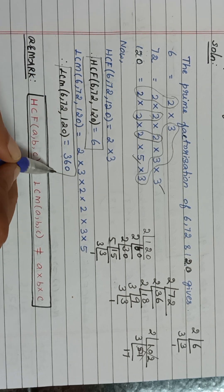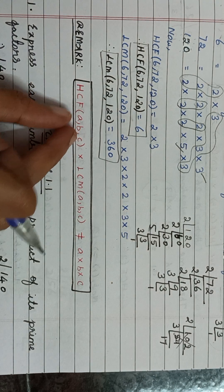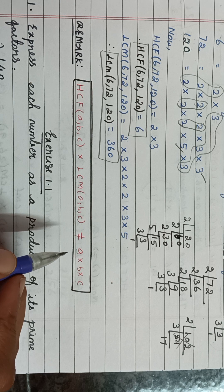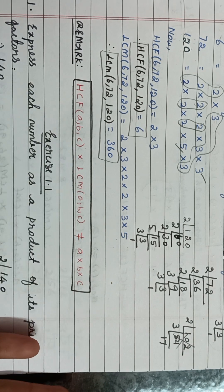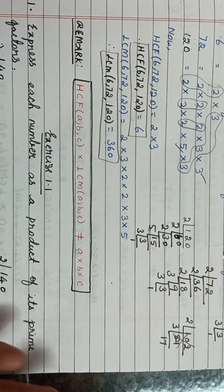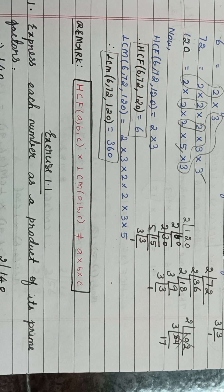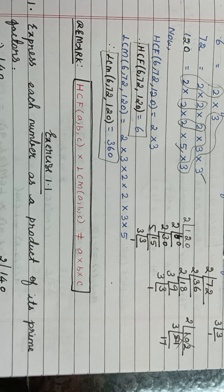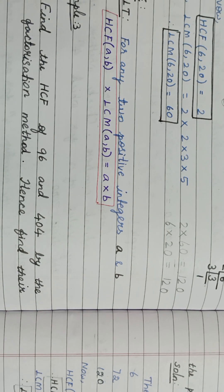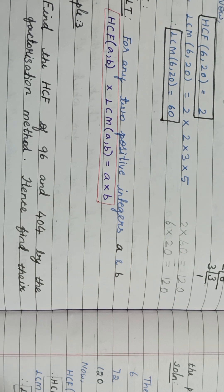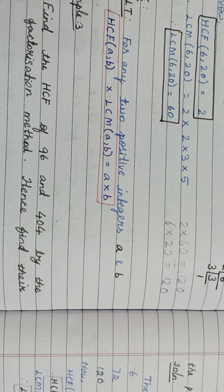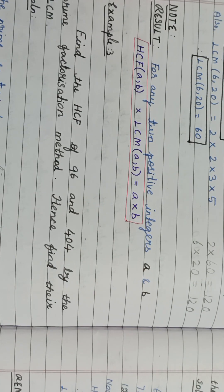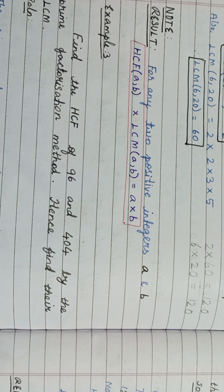So 360 is the LCM of the given three numbers. As I told you, for three numbers HCF × LCM will not equal the product of the three numbers. But if two numbers are given, you can apply that condition to find LCM or HCF. First find HCF using prime factorization, then find LCM using that formula — or find LCM by prime factorization and then HCF using the formula. It is better to find HCF using prime factorization and then LCM using the result.